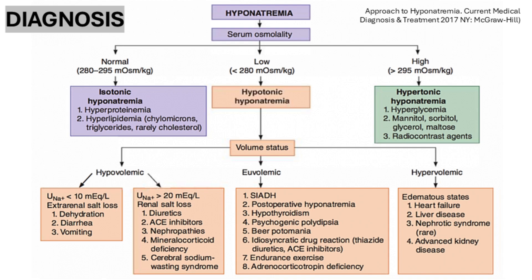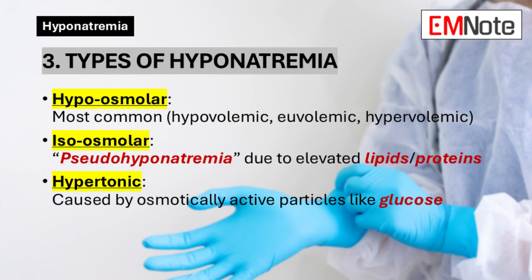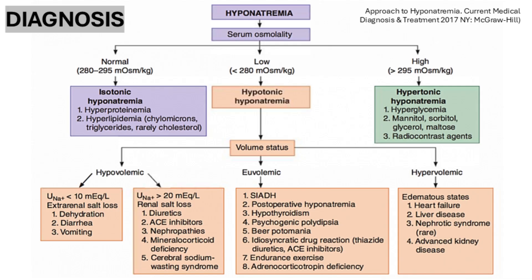Hypertonic hyponatremia occurs when osmotically active particles in the plasma, such as glucose, cause water to shift from the intracellular to the extracellular compartment, diluting the sodium concentration.